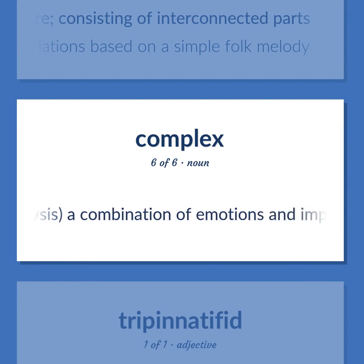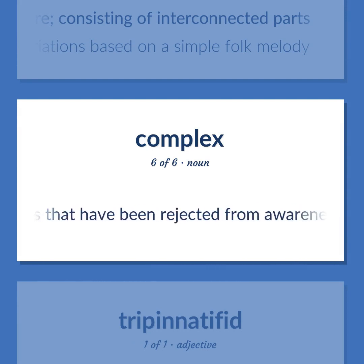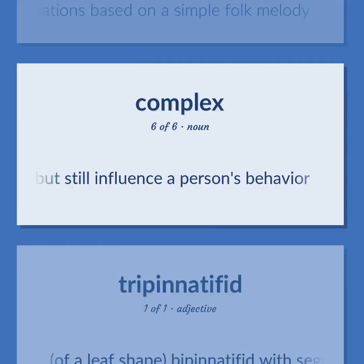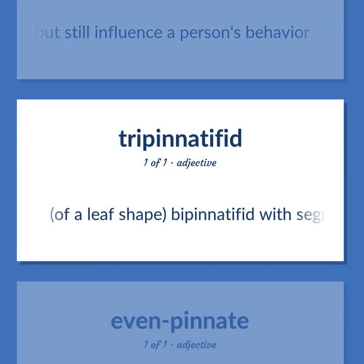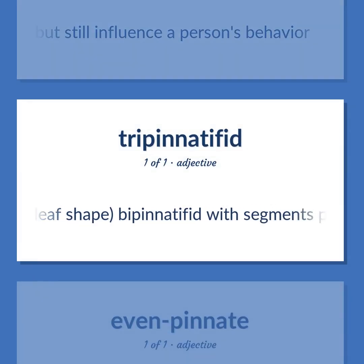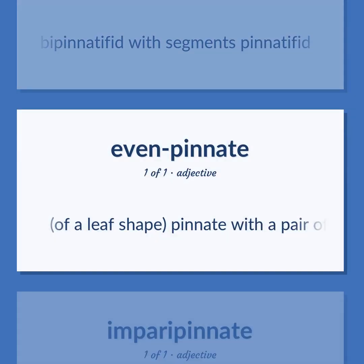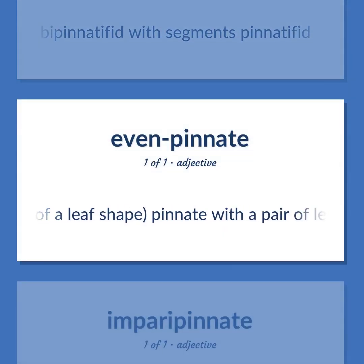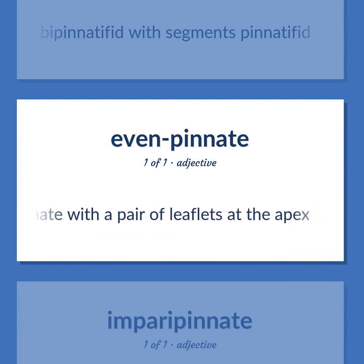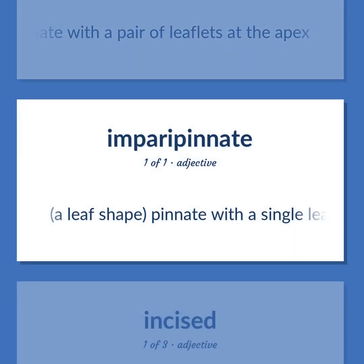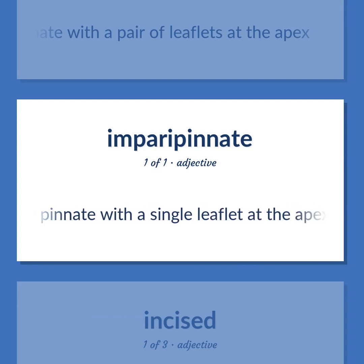Complex (psychoanalysis): A combination of emotions and impulses that have been rejected from awareness but still influence a person's behavior. Of a leaf shape: bipinnatifid with segments pinnatifid. Of a leaf shape: pinnate with a pair of leaflets at the apex. A leaf shape: pinnate with a single leaflet at the apex.